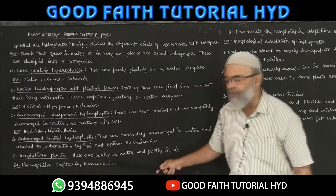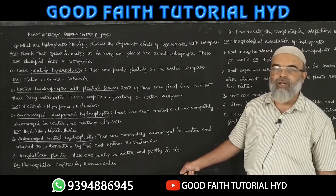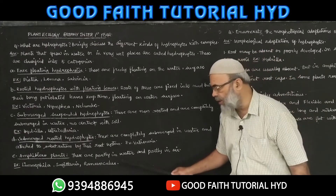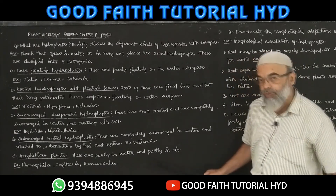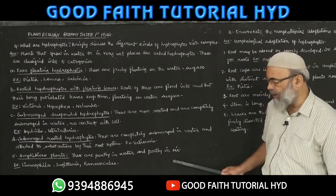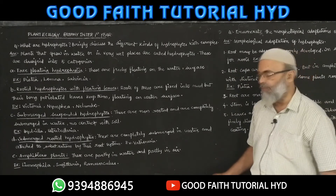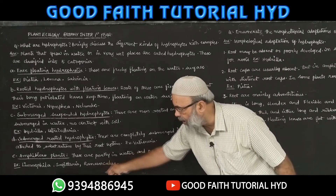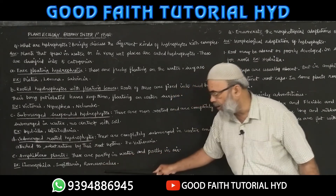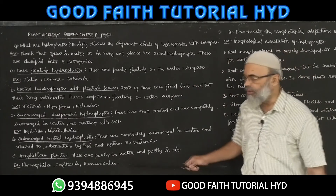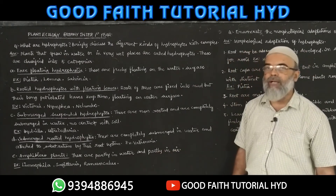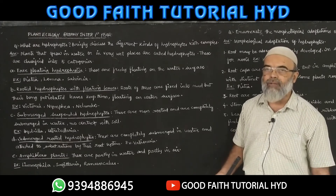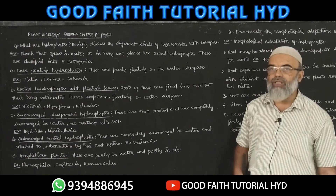Fifth and last category: amphibious plants. These can also come as a short answer one-mark question. Amphibious plants are partly in water and partly in air. Examples are Limnophila, Sagittaria, and Ranunculus. These plants live partly in water and partly on land.